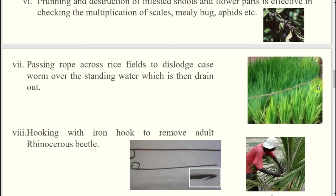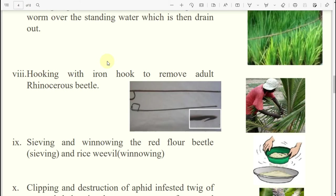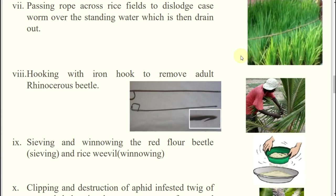Iron hook is used for which insect? Rhinoceros beetle. In case of rhinoceros beetle, if you use this iron hook it will be interlocked and you can easily pull those rhinoceros beetles out.